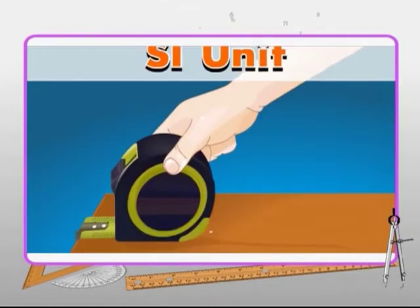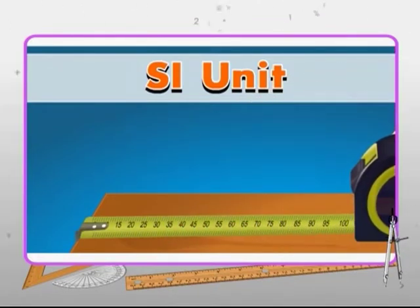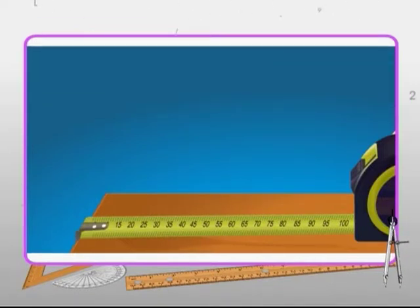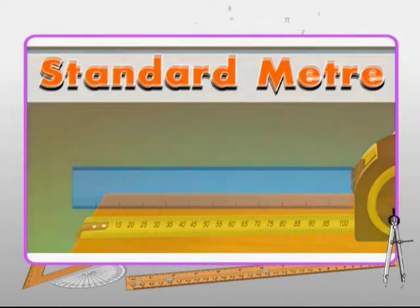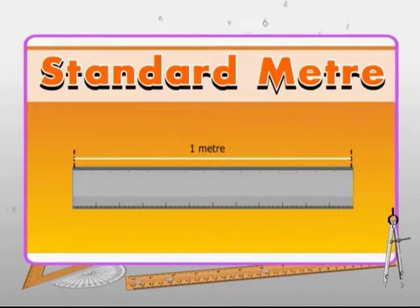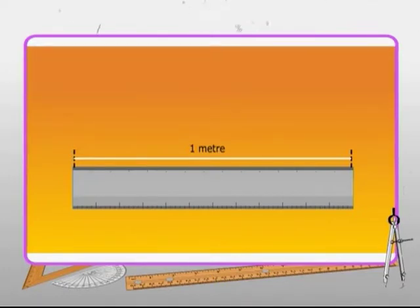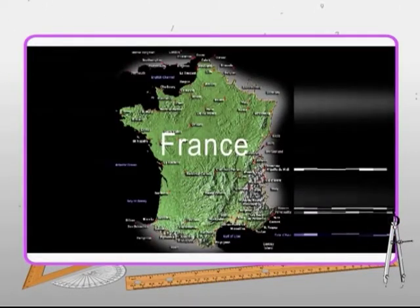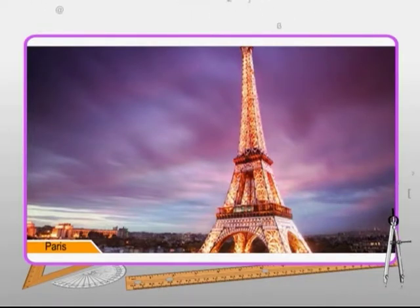The meter is used as the SI unit of length in many countries. But how can we ensure that the meter used is the same everywhere? For this, we need one special meter everybody can refer to. This is called the standard meter. The standard meter is made up of a special metal bar kept at a fixed temperature. One meter is the distance between two marks on this bar. The original standard meter is kept in France. Other countries have a copy of this meter. The accuracy of any other meter rule can be checked against these standard meters.